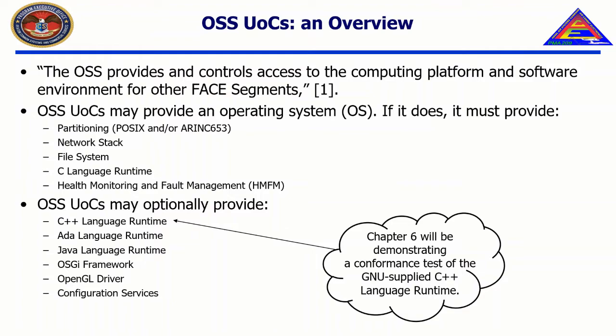An OSS may optionally provide one or more of the following: the C++ language runtime, ADA language runtime, Java language runtime, the OSGI framework, OpenGL drivers, and configuration services. These optional capabilities must be supplied in a POSIX or RNN 653 partition.